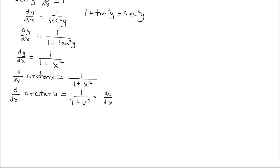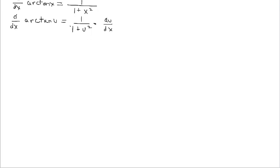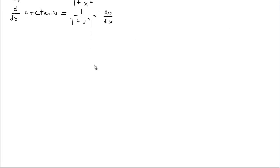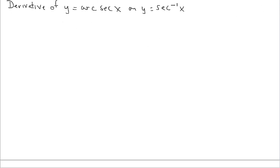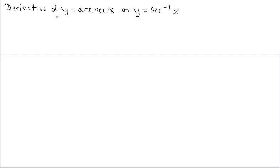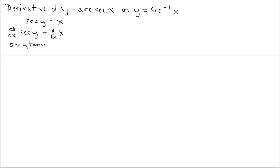Let's look at one more derivation — the derivative of arc secant of x, the parent function. Consider the regular graph y equals secant of x, but switch the x and y for the inverse: secant of y equals x. Bring in the derivative operator. Implicitly differentiate the outside function, secant. That derivative is secant y tangent y, times dy over dx, which equals 1.